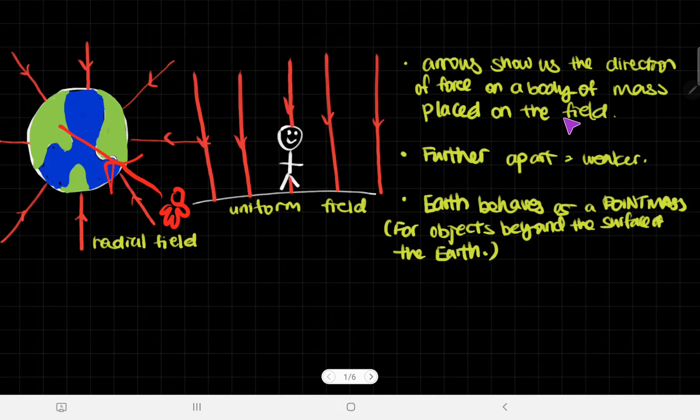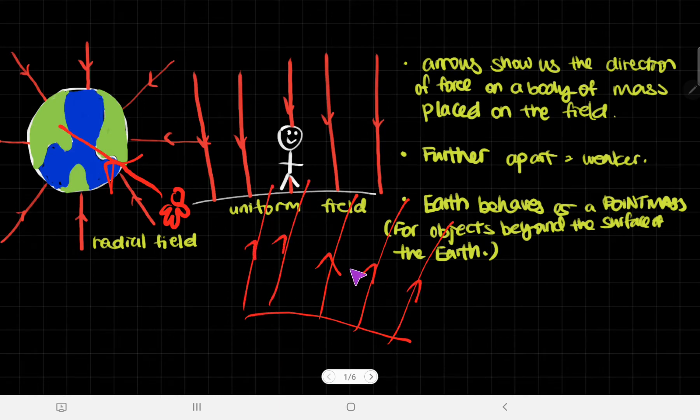Now if this was wrong and if the law was that it was the direction of the force on the body that is creating this field, then it would be a completely different direction. What is creating the field on Earth is Earth, so it's going to be in the opposite direction. But no, it is the direction of force on the body of mass that's placed on the field and therefore it is always going into Earth.